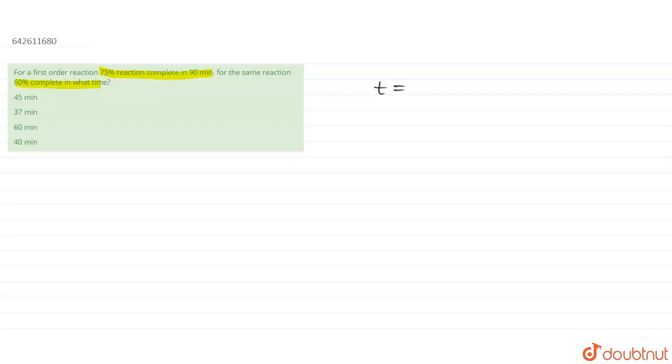The formula is t = 2.303 divided by k, log of A₀ upon At. This is the required formula for the first order kinetics, where A₀ is the initial concentration, and At is the concentration at time t.